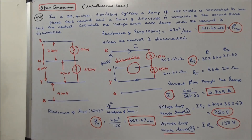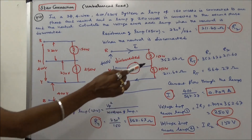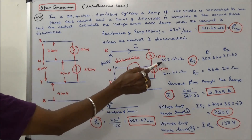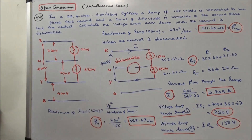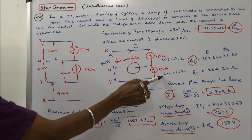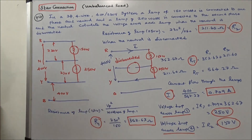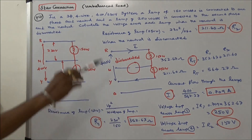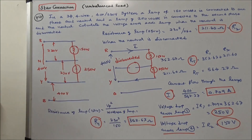When resistance is high, voltage drop is more; when resistance is low, voltage drop is less. This is the key information obtained from this problem. Thanks for listening.